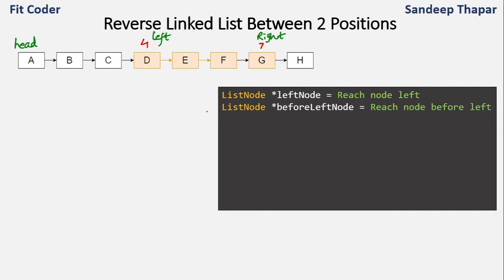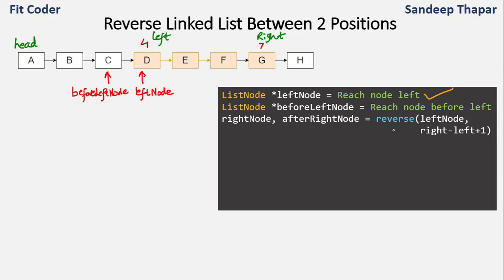The first step is to reach the left node, which is D. We simply start from head and keep traversing until we reach that index. We also need the node before D, which is C — the before-left node. Then we call a reverse function that takes the left node as the starting node and reverses a count of nodes equal to right minus left plus one. Since right is 7 and left is 4, we reverse 4 nodes: G, F, E, D.